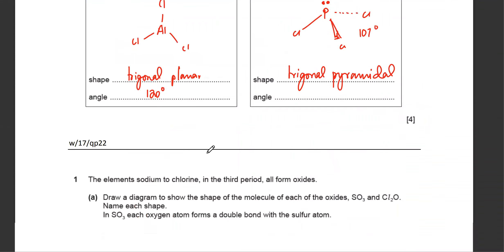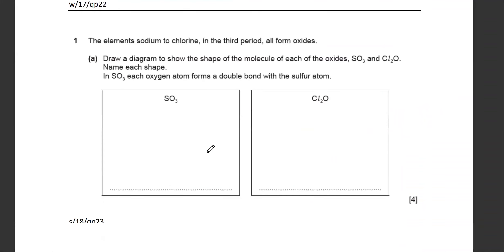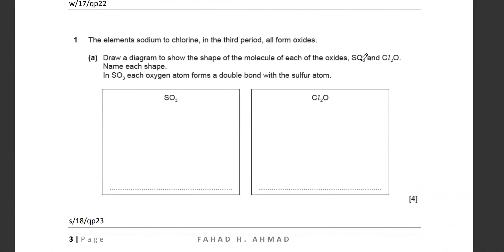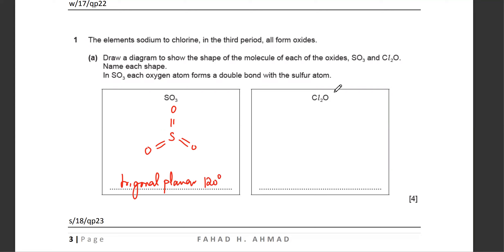Next, you're asked to draw the shapes of SO3. Sulfur has six electrons and oxygen makes double bonds, so there are basically three double bonds and no lone pairs — all six electrons of sulfur are used up. With no lone pairs, SO3 is trigonal planar with all angles of 120 degrees.